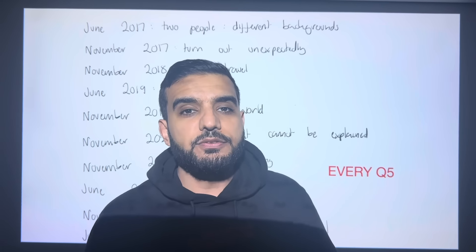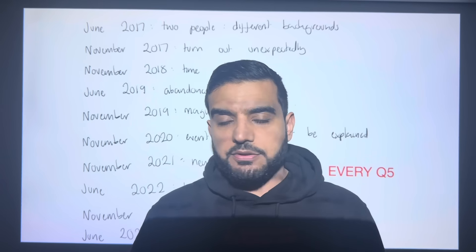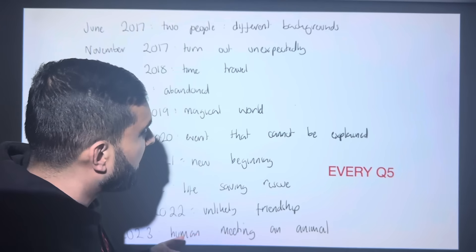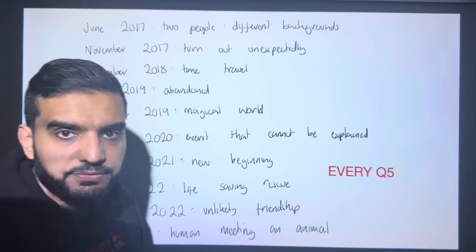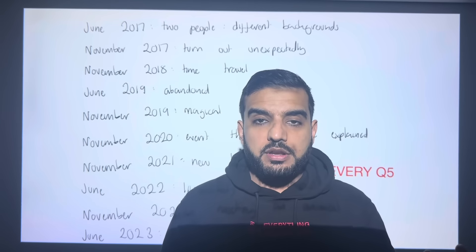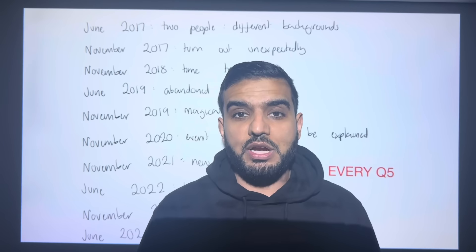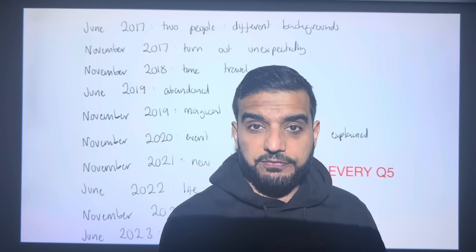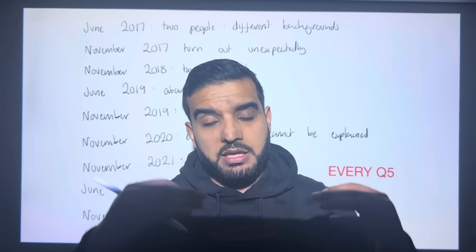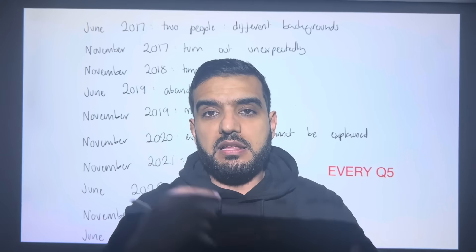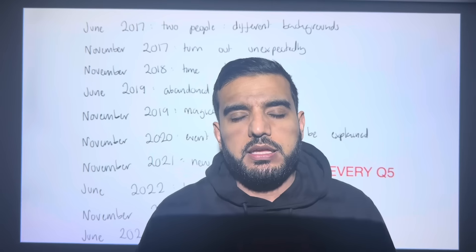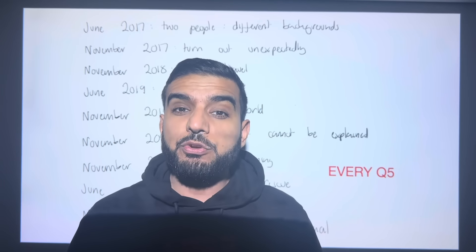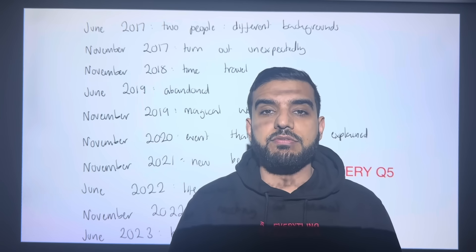These are all the question fives that have ever come up. In this video I've given you eight different stories — you can definitely tweak them to fit every single question five. If you don't want to learn all eight, learn one, two, or three. Write up the stories, get them marked, get some feedback, keep rewriting them until you reach a certain grade, then learn them off by heart and use them in your exam. It's a lovely way of securing 50% of your GCSE before the exam even starts.